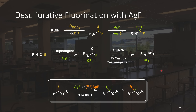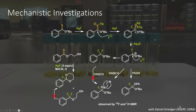As discussed in Chapter 3, during our work on the desulfurative fluorination of thionoesters, we were able to demonstrate that silver(I) fluoride is able to affect desulfurative fluorination through the formation of silver(I) sulfide. This can be rationalized through the activity of silver(I) as a soft Lewis acid, which makes it easier for fluoride to add to the thiocarbonyl. Through the coordination of a second silver atom, this allows the elimination of silver sulfide.